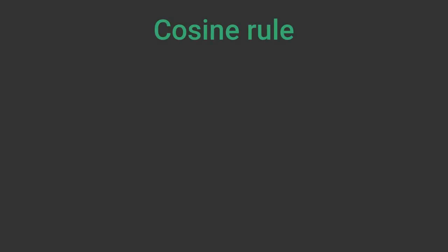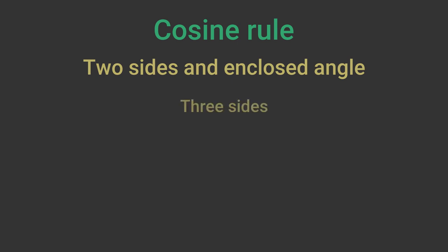The cosine rule is a trigonometry formula that relates the sides and angles of a triangle. It can be used to solve a triangle if we know either the sides of the triangle and the angle enclosed between those sides, or three sides but none of the angles.